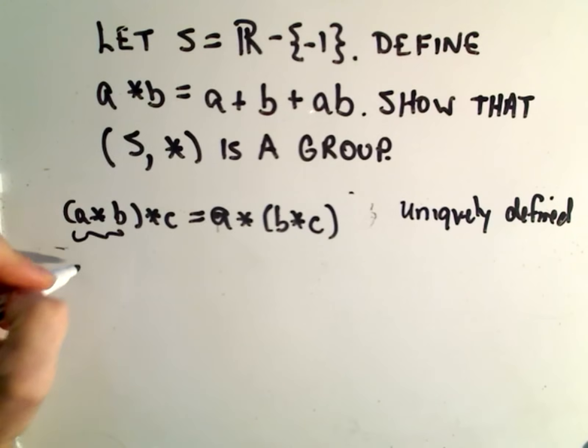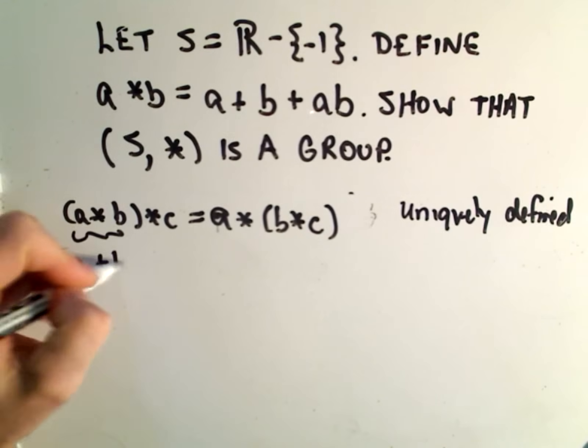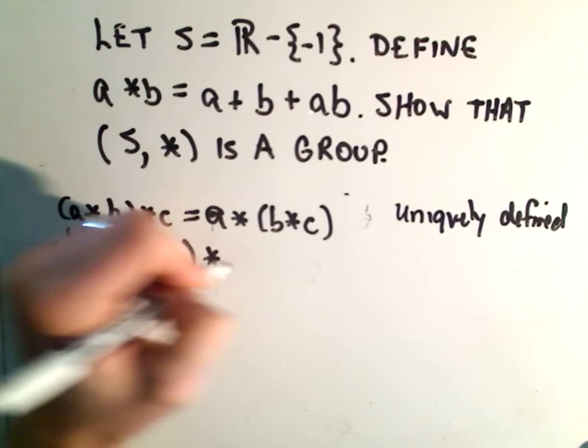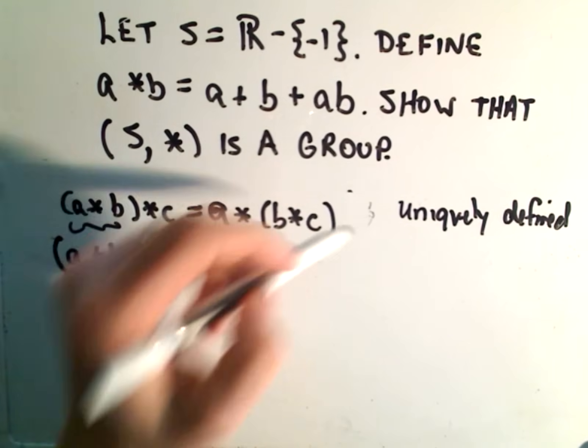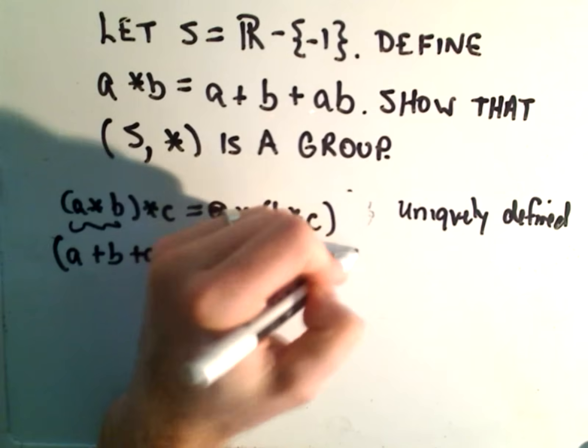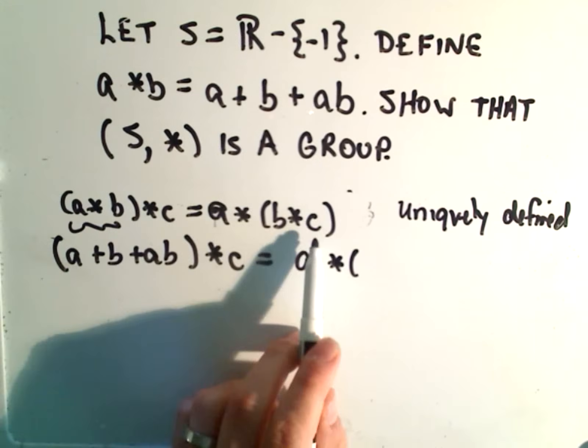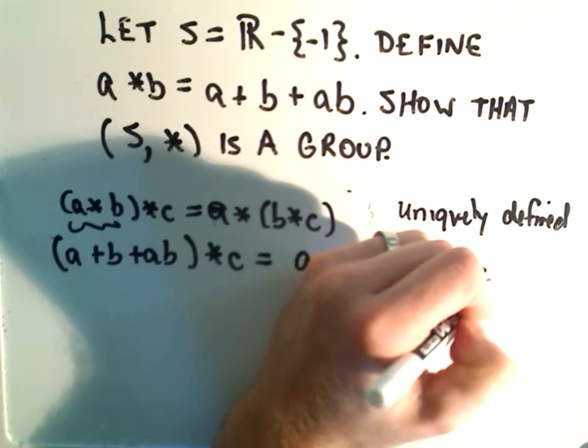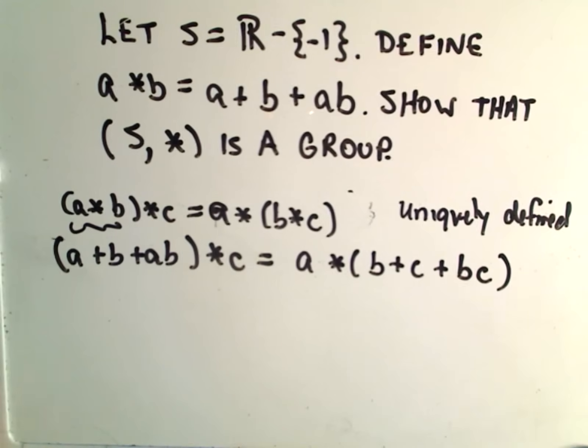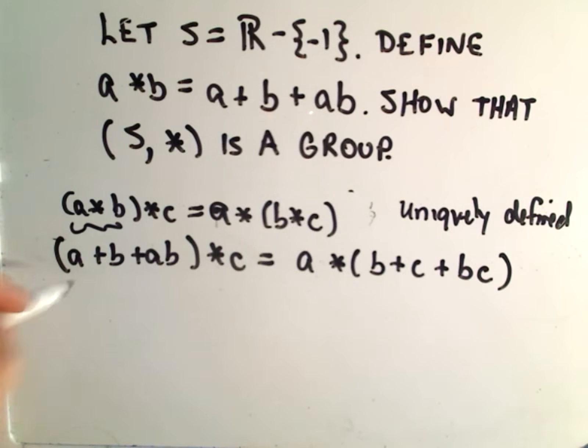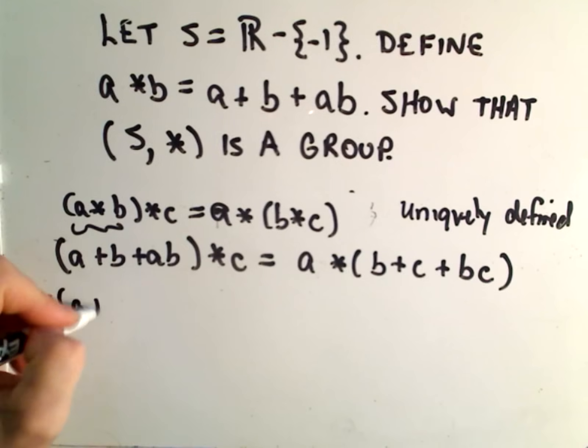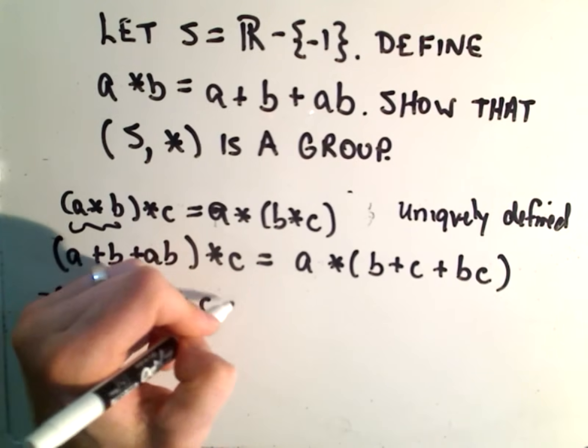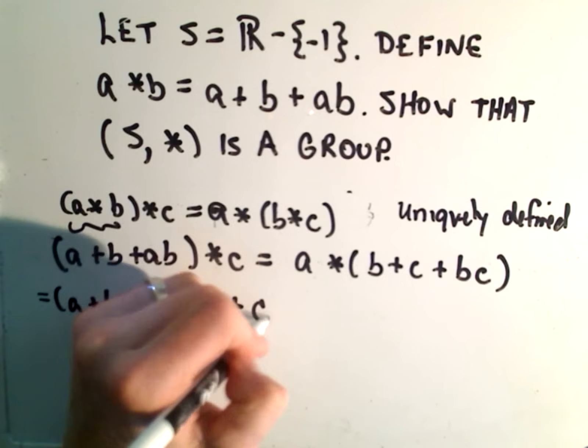If we apply A star B by the definition, we get A plus B plus AB, all star C. If we apply the definition to the right side, we'll get A star B plus C plus BC. According to this definition, you write the first thing,